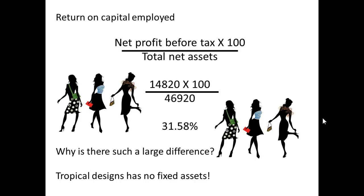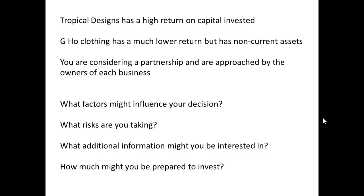So why is there such a large difference between this business and that of Tropical Designs? Quite simply because Tropical Designs doesn't have any fixed assets. So Tropical Designs appears to have a high return on capital invested, while Jiho Clothing has a much lower return but has non-current assets.